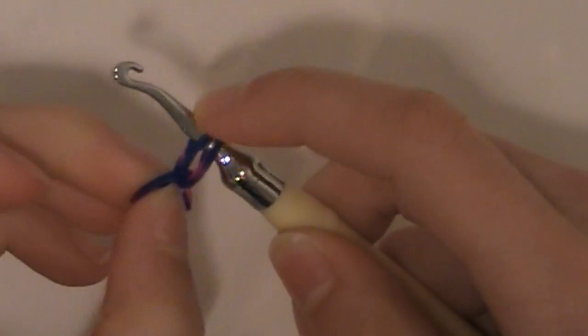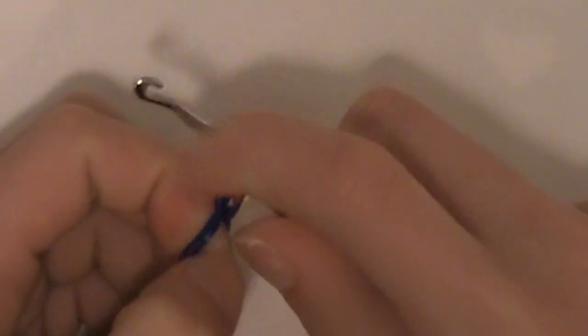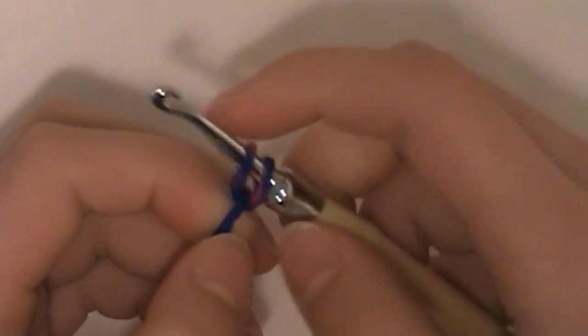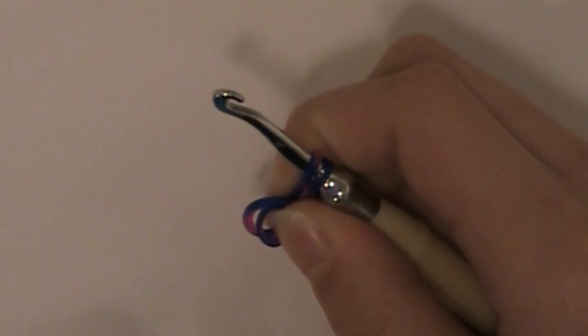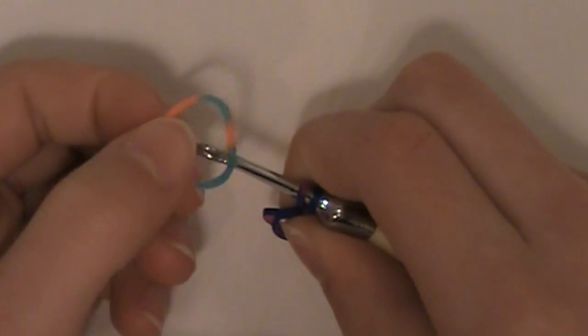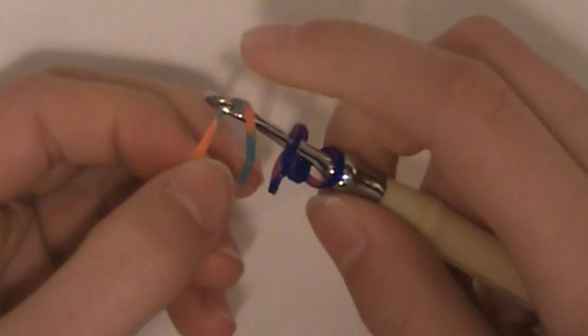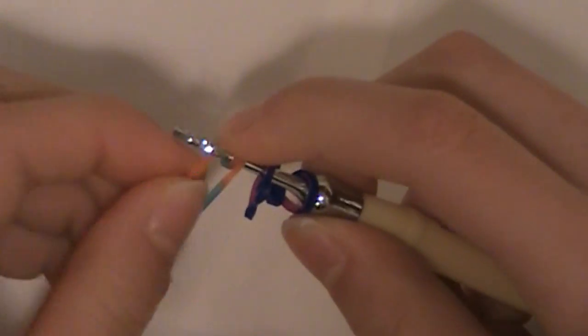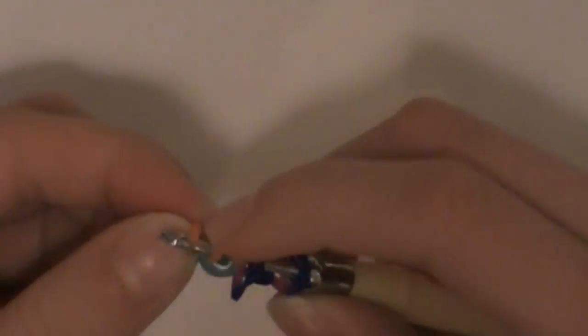Alright so next we are going to take our other color. Or you can use the same color. I'm going to be using a tie dye orange and blue. And we're going to wrap this four times around our hook. So one, two, three, four.